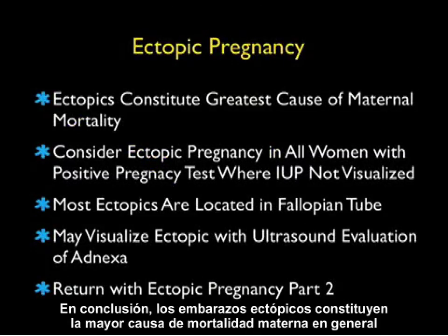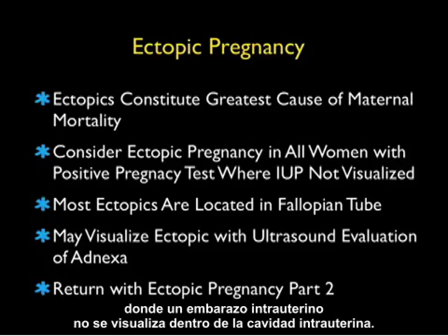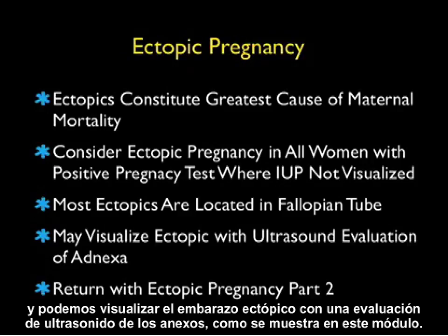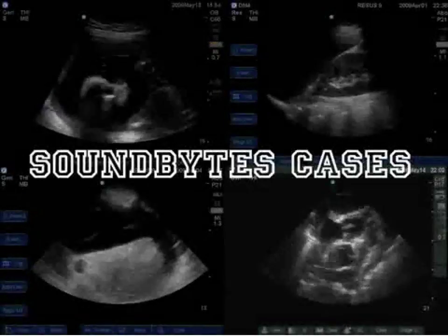In conclusion, ectopic pregnancies constitute the greatest cause overall of maternal mortality, and we must consider an ectopic pregnancy in all women with a positive pregnancy test where an intrauterine pregnancy is not visualized within the fundal part of the uterus. Most ectopic pregnancies are going to be located in the fallopian tube, and we may actually visualize the ectopic with ultrasound evaluation of the adnexa, as shown in this module. We'll return with ectopic pregnancy part 2, which goes over the varied manifestations of ectopics.